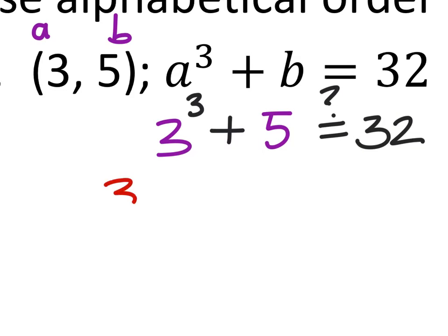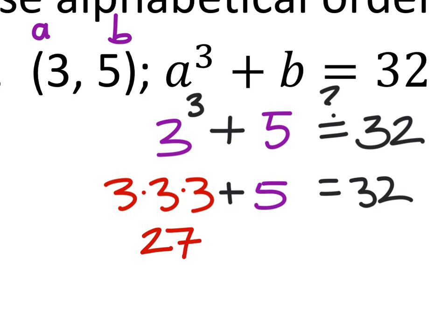Well, 3 to the power of 3 is the same as 3 times 3 times 3. We'll add this to 5. Now, not that everyone would need to show this much work, but 3 times 3 times 3 is 27.